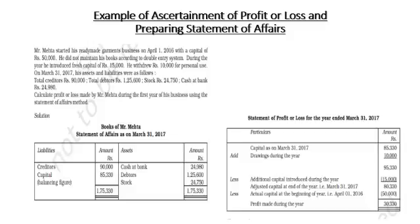When the closing capital is missing, you have to prepare the closing statement of affairs as at 31st March 2017 — similar to a balance sheet. Creditors 90,000 go on the liabilities side; debtors 1,25,600, stock 24,750, and cash 24,980 go on the assets side. Other items, if given, should be allocated according to assets and liabilities. Then calculate the balancing figure, which is the capital.